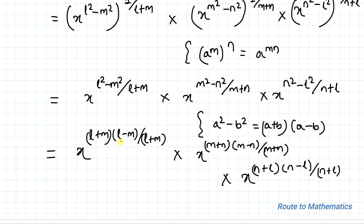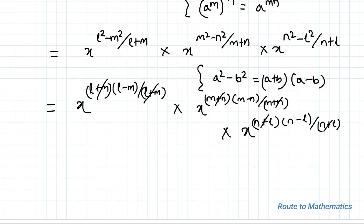Here you can see that in the numerator we have (l+m) and in the denominator we also have (l+m), so these two terms cancel out. Similarly (m+n) and (m+n) cancel out, and (n+l) and (n+l) get cancelled out.